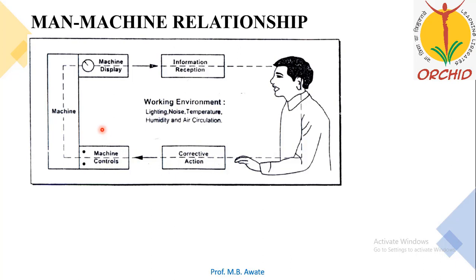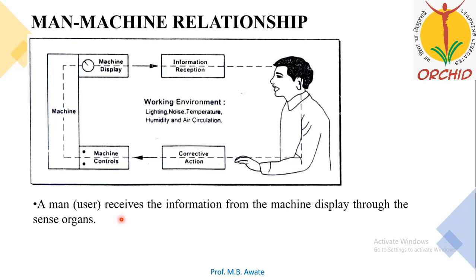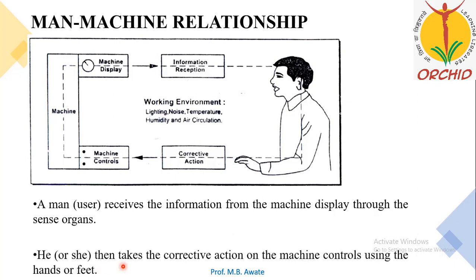Initially, from the machine display, the person receives some information. He sees it with his eyes, interprets it, and accordingly takes corrective action on the machine controls. Again, according to those actions, the machine shows the display, the person receives information, the brain interprets it, and again the person takes corrective action. A man or user receives information from the machine display through sense organs and takes corrective action using hands or feet.